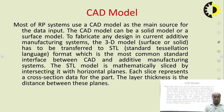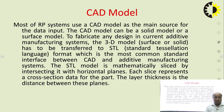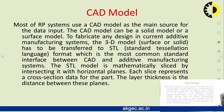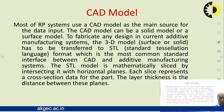What is a CAD model? Most RP systems use a CAD model as the main source for data input. The CAD model can be a solid model or a surface model. To fabricate any design in current additive manufacturing systems, the 3D model — whether a surface model or a solid model — has to be transferred to STL (Standard Tessellation Language) format, which is the most common standard interface between CAD and additive manufacturing systems. The STL model is mathematically sliced by intersecting it with horizontal planes. Each slice represents a cross-section data for the part, and the layer thickness is the distance between these planes.